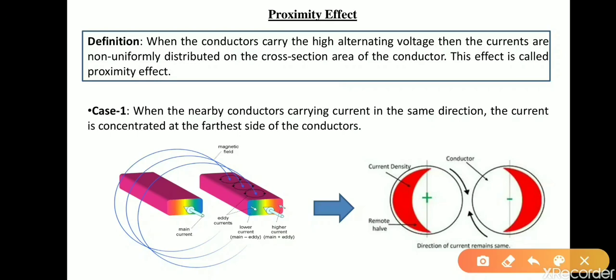Now, what is proximity effect? Let's see the definition. When the conductor is carrying high alternating voltage, the currents are non-uniformly distributed on the cross-section area of the conductor. This effect is called proximity effect.